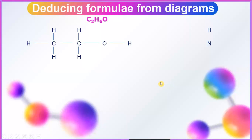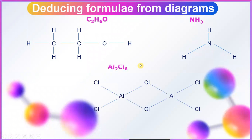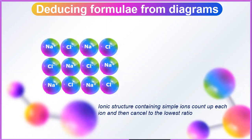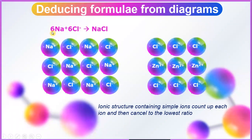Next, we go into deducing formula from the diagram. From the diagram you can see 2C, H6, and one oxygen, so you get the formula C₂H₆O. On the other hand, from another diagram, it's only one nitrogen — 1N and 3H. And finally, we can see that there is 2Al and the chlorine there is Cl6, so the formula for this diagram is Al₂Cl₆. From another diagram, you can see there are 6Na⁺ and 6Cl⁻ to form NaCl. Whereas in another diagram, there are 3Zn²⁺ and 6Cl⁻ to form ZnCl₂. So ionic structure: count out each ion, then cancel to the lowest ratio.